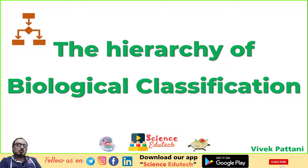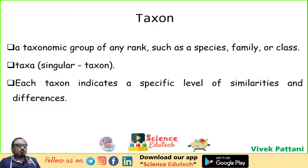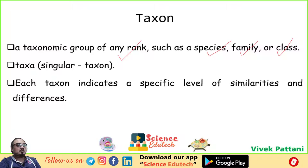As we discussed in the last lecture, classification is simply not a one-step method, but it is a series of sequential steps in which each taxon shows a particular category. Starting with the taxon, in each such classification, each taxon is taken as a reference unit, but in real sense it basically indicates a specific rank. A taxonomic group of any rank, such as species, family, class — the singular being taxon — and each taxon indicates a specific level of similarities and differences.